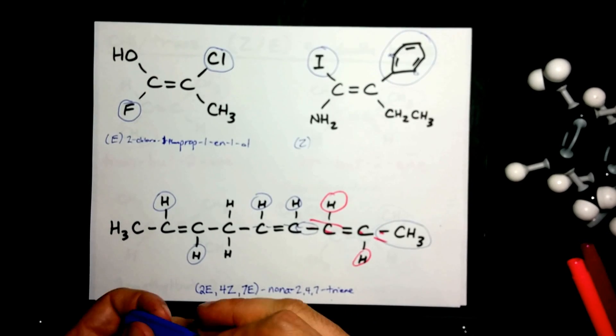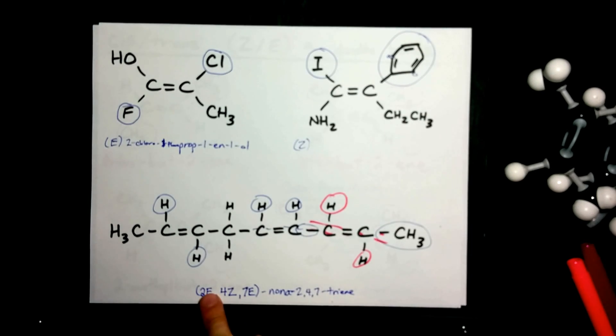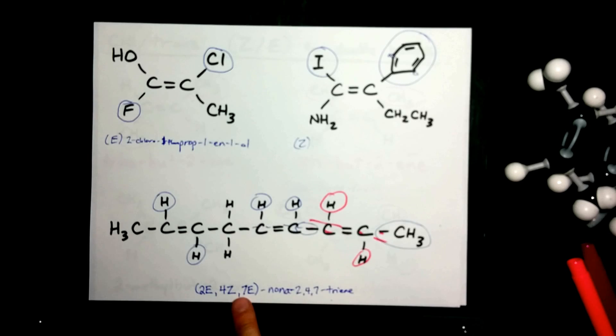This is why it's so much easier with E and Z. Because you can just say the double bond starting at carbon 2 is E. The double bond starting at carbon 4 is Z. And the double bond starting at carbon 7 is E.